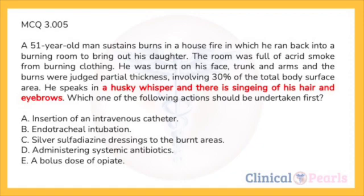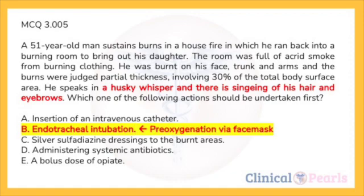Airway management is crucial. Several important clues indicate he probably has upper and lower airway injury. He will have inhaled smoke, and clothing may have given off noxious fumes capable of damaging the respiratory epithelium. His singed hair and eyebrows suggest extremely close contact with the fire, indicating a burn injury to his upper airway. He is speaking in a husky whisper, suggesting he has already developed laryngeal edema and potential airway compromise. He needs to be intubated and ventilated before stridor sets in and intubation becomes impossible — B is correct.